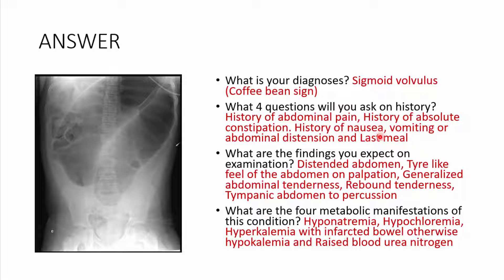Also ask about their last meal. For examination findings, picture yourself carrying out a normal examination. On inspection, the abdomen will be distended. On palpation, you'll feel a tire-like feeling with generalized abdominal tenderness and rebound tenderness in cases of peritonitis. On percussion, the abdomen may be tympanic.